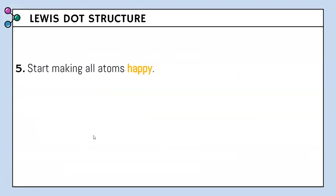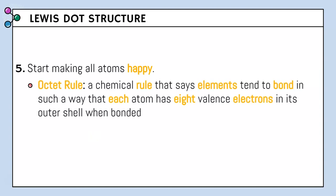Step number five, we're going to start making all atoms happy because of the octet rule — a chemical rule that says elements tend to bond such that each atom has eight valence electrons in the outer shell when bonded. There is an exception: all elements want eight when bonded, but hydrogen only wants two.